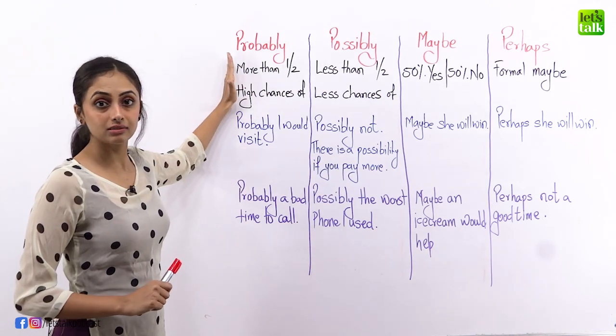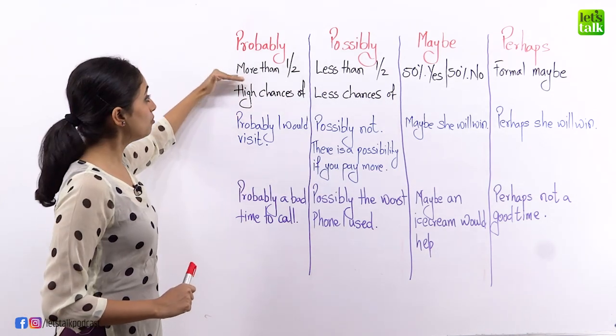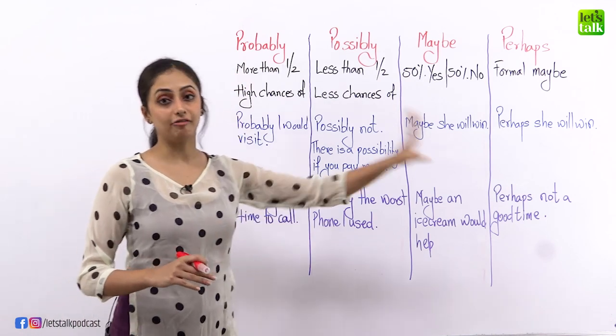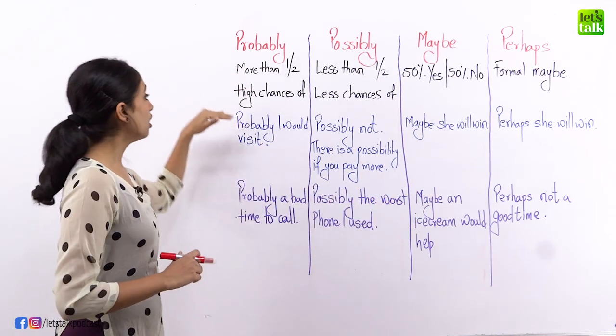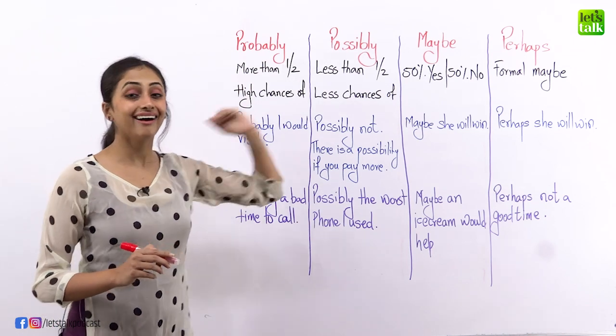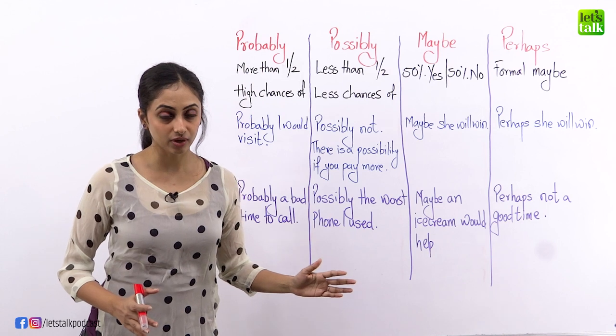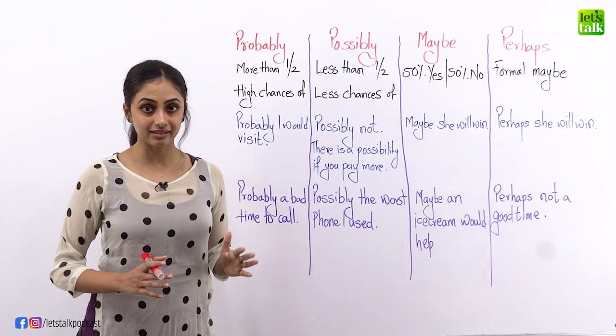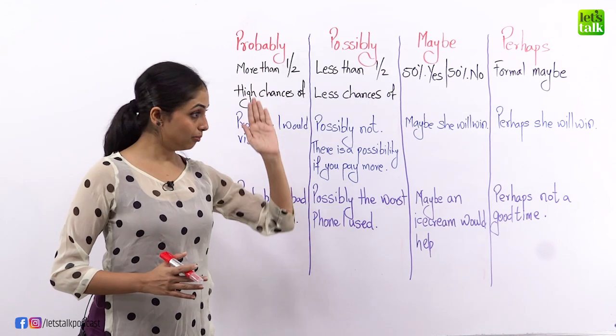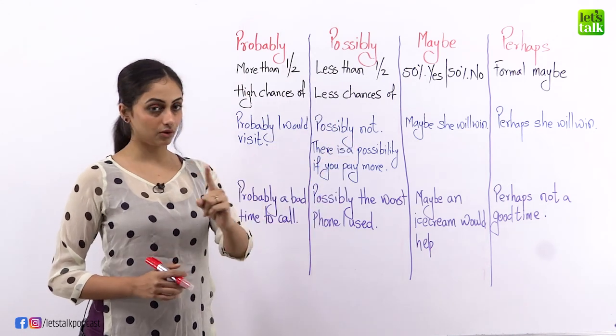Probably means that there are more than half, that means more than 50% of chances, high chances of something happening. I'm probably dieting, that means I'm more than 50% sure that I will diet.